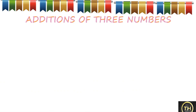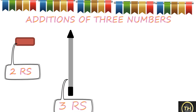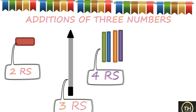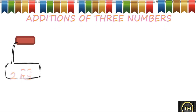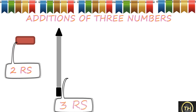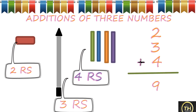Addition of 3 numbers. Maya bought an eraser for Rs. 2, a pencil for Rs. 3, and some colored chalks for Rs. 4. 2 plus 3 makes 5, and 5 plus 4 makes 9. So Rs. 2 plus Rs. 3 plus Rs. 4 is equal to Rs. 9. Maya should give Rs. 9 to the shopkeeper.